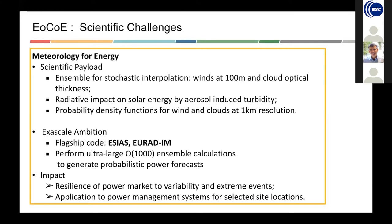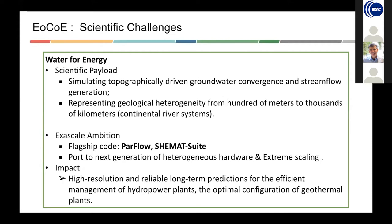The codes used are ESEAS and EURAD-IM. Water for energy is related to the use of water for energy production, both hydropower plants and geothermal energy. It mainly involves the simulation of water through porous media — the flow of water within the Earth and also the surface movement of water — to simulate the groundwater and the whole river system within Europe. The two flagship codes going to exascale are Parflo and Shemat.